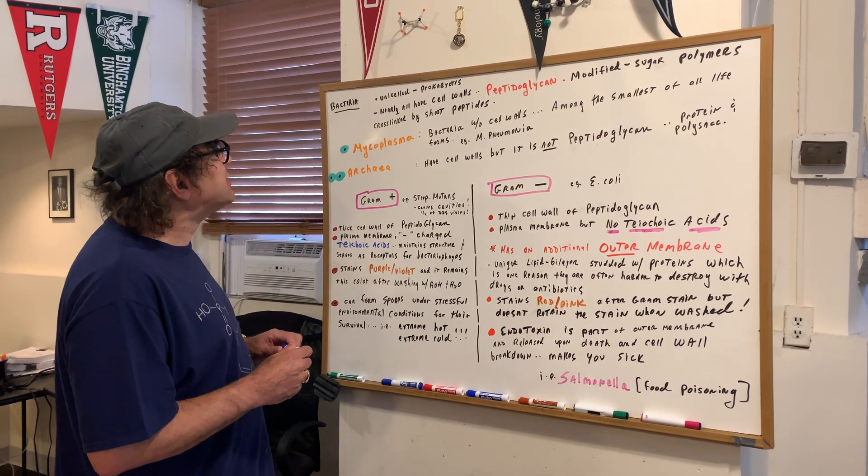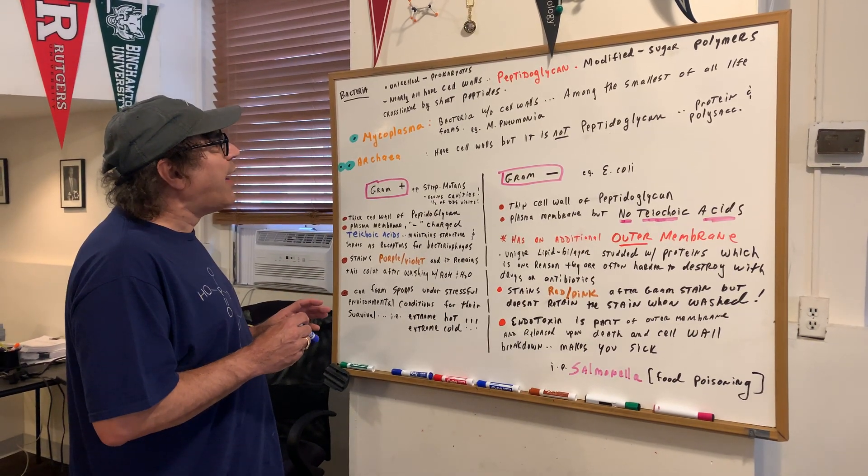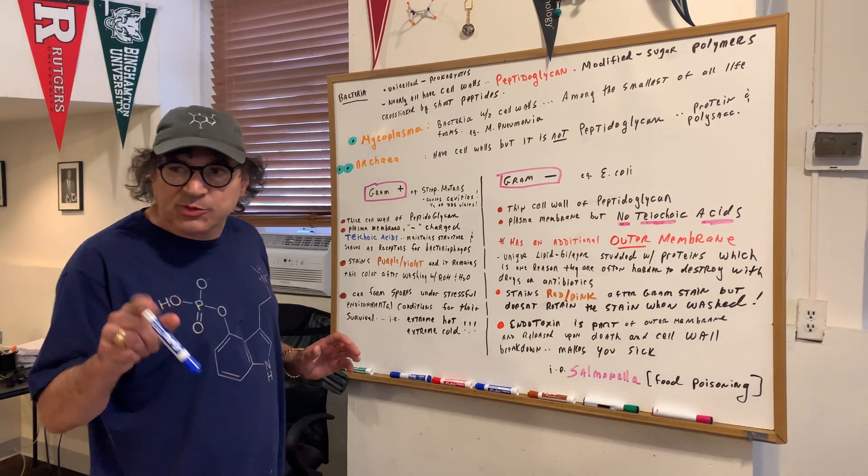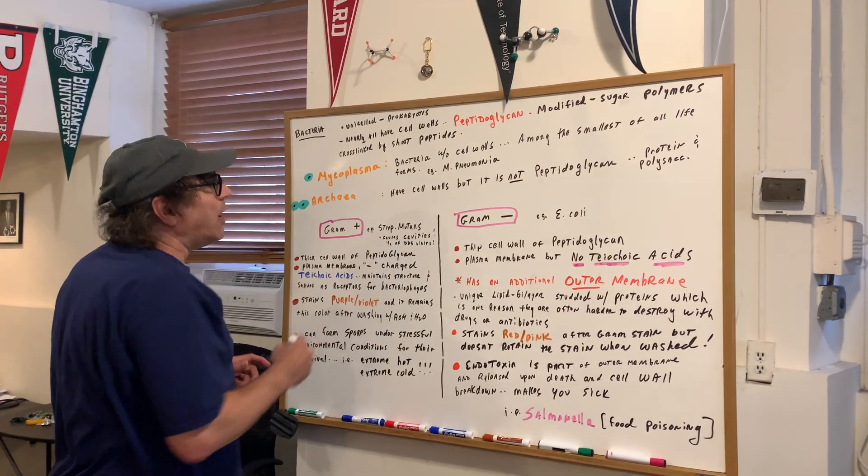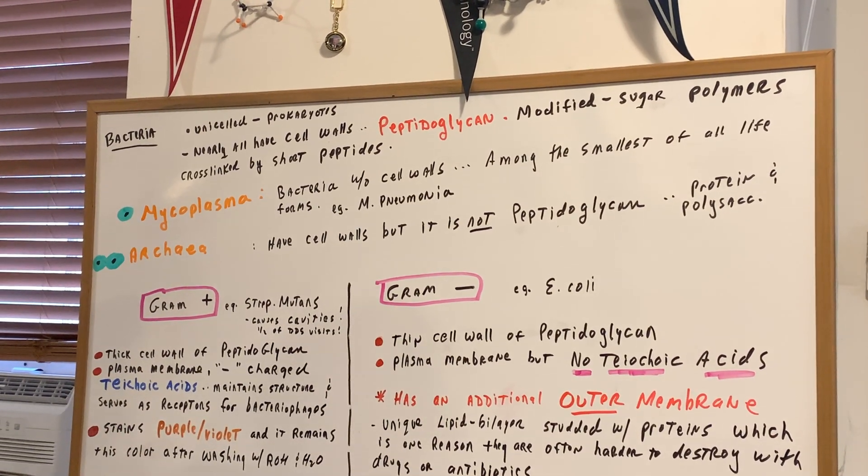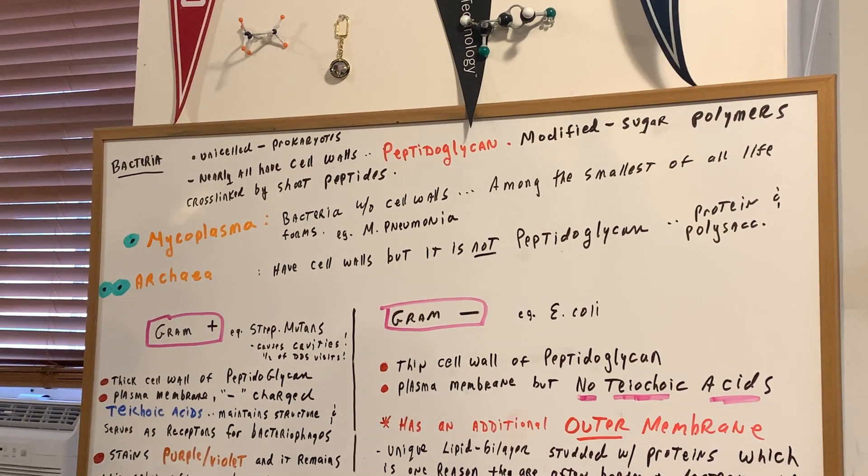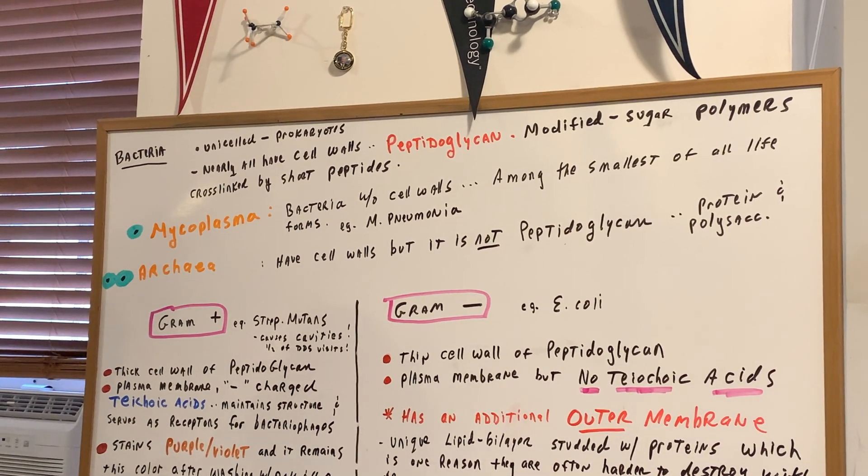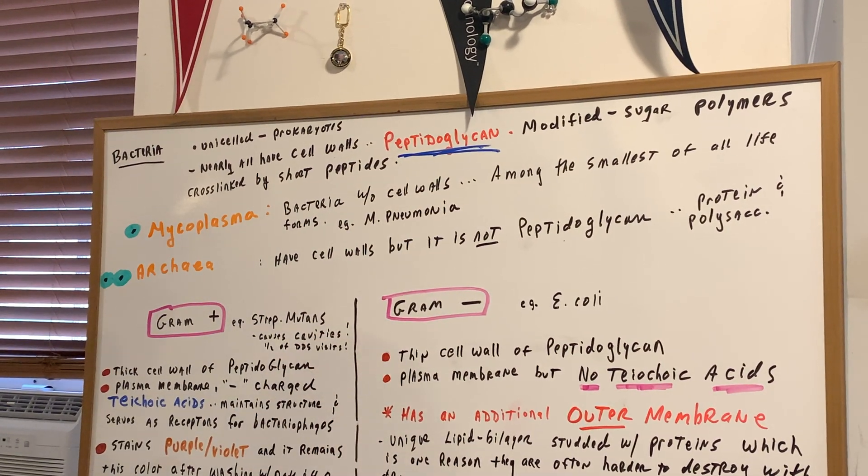Now bacteria are unicellular prokaryotes, and nearly all of them have cell walls. And I'll explain what I mean by nearly all of them in a second. The cell wall is made of peptidoglycan, which as you remember from one of my videos, these are modified sugar polymers cross-linked by short peptides. So peptidoglycan makes up the cell wall of the bacteria.